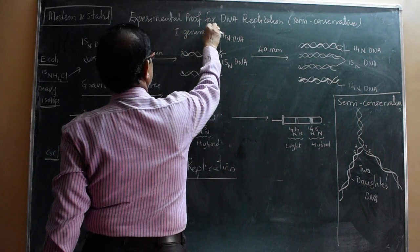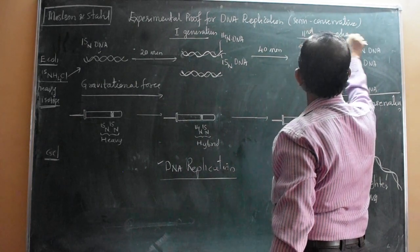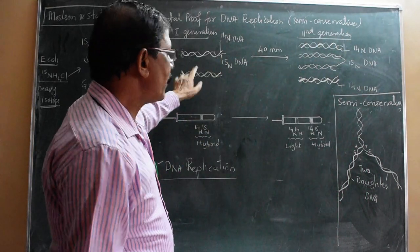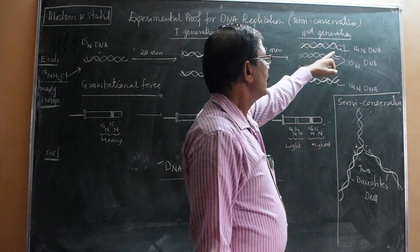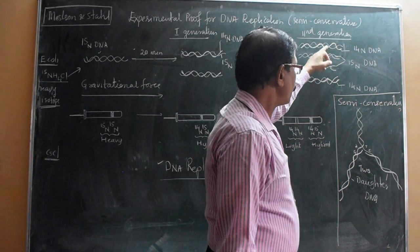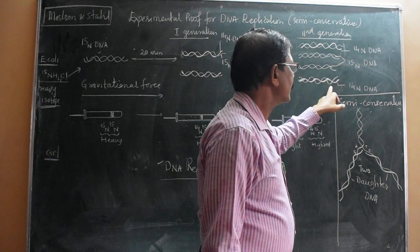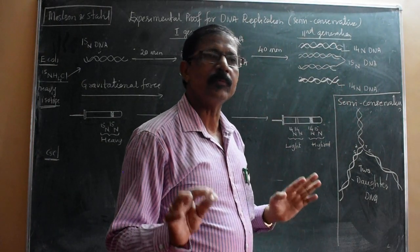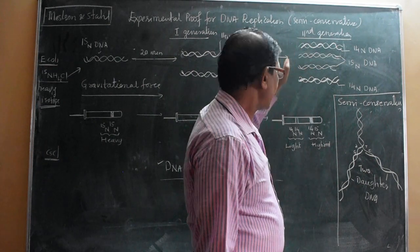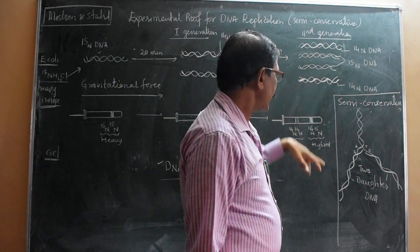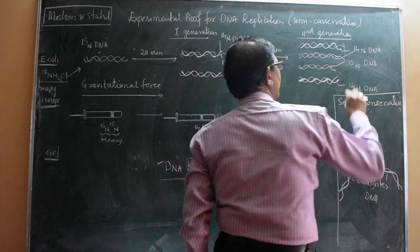In the second generation, both DNAs divide and after about 20 minutes, we get 4 DNA. In these 4 DNA, one type has 14N strands and another type has 15N strands. Means 50-50 percent - here two 14N-containing DNA and one 15N-containing strand. So one 14N is also there and one 15N is also there - the hybrid is also there and one is light.